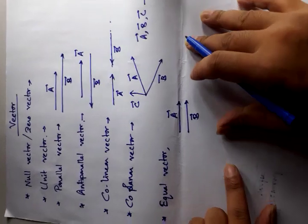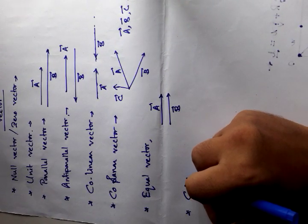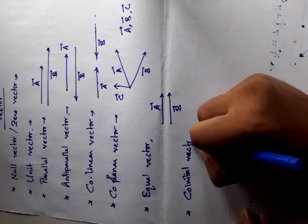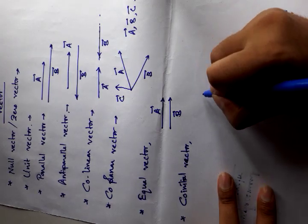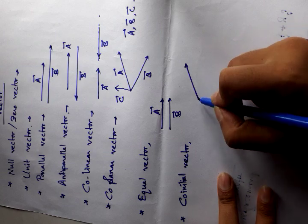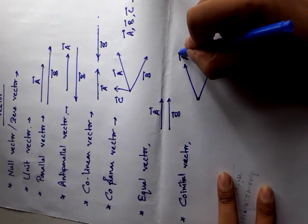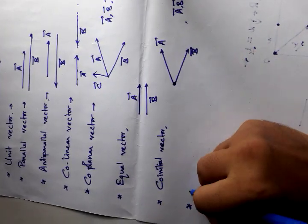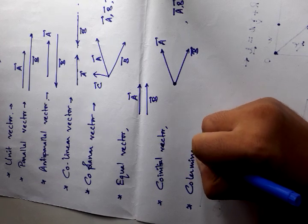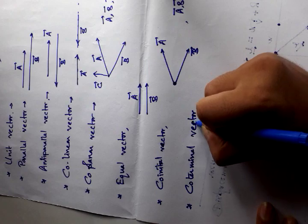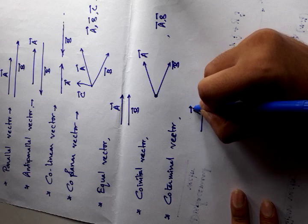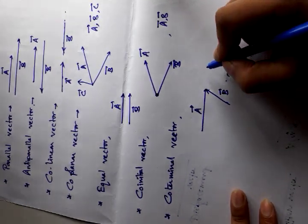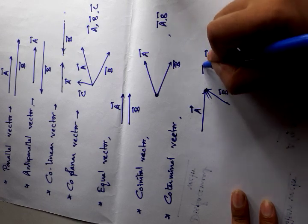After that, co-initial vector. If two vectors start from the same initial point, then they are called co-initial vectors. Here A and B are co-initial vectors. Next, co-terminal vector. Co-terminal vector means if two vectors A and B have the same terminal point — terminal means ending point — then A and B are called co-terminal vectors.